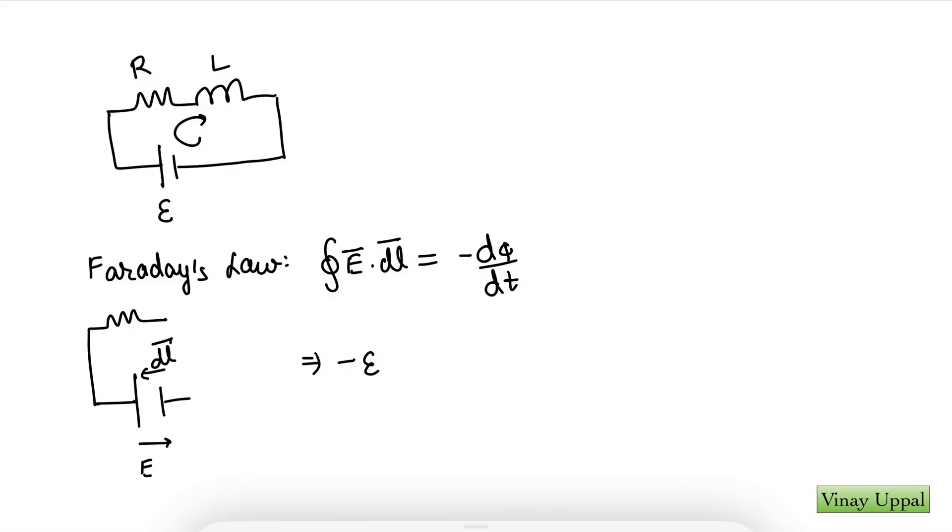Then I go across the resistor. Electric field will be pointing in the same direction as the current, which is also the same direction as dL vector. So I will have plus IR. And along the inductor,